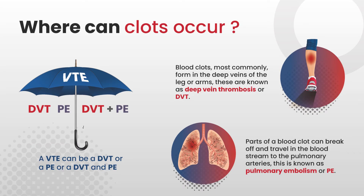In the venous system, blood clots most commonly form in the deep veins of the legs or the arms. These are known as deep vein thrombosis or DVT, but they can occur in other veins as well, such as the renal vein. Part of a blood clot can break off and travel in the bloodstream to the pulmonary arteries — this is known as a pulmonary embolism, or PE. Collectively, DVT and PE are known as VTE, or venous thromboembolism, represented here by an umbrella.